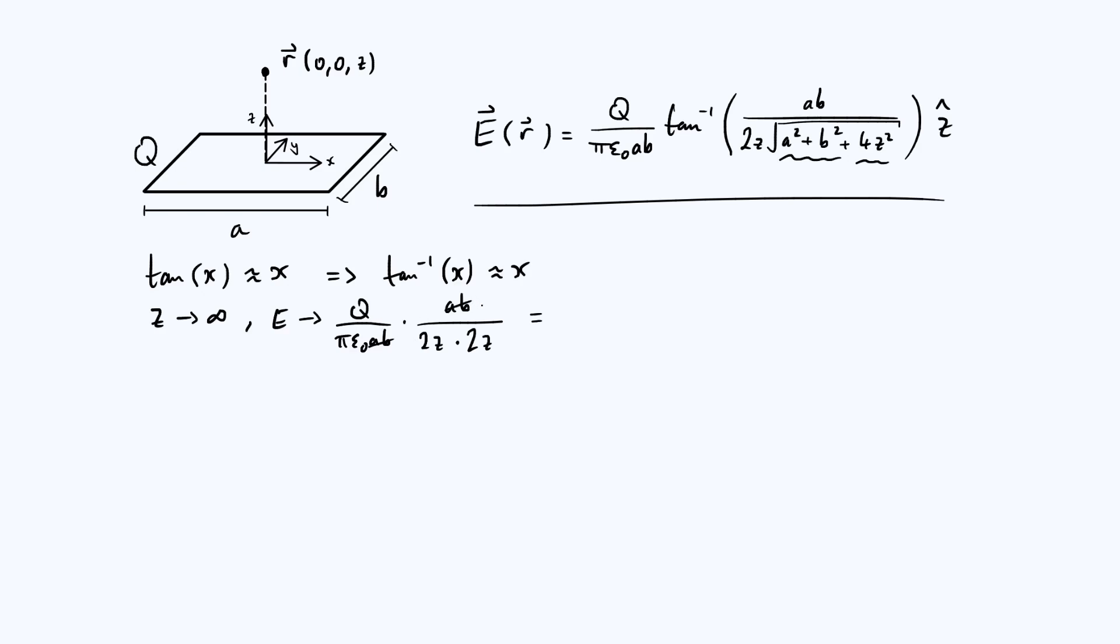Now we can simplify that a little bit. The a's and the b's cancel, and you just get q over, the 2's combine together into a 4, so you get 4 pi epsilon 0 z squared. Now this in fact should look familiar as the electric field that you get from Coulomb's law. It's just an inverse square field. The interpretation is that if you're far enough away you can't see the detailed structure of your charge. Everything just looks like a point charge if you're far enough away, and so it makes a lot of sense that we would expect to get the field of a point charge that we're familiar with.